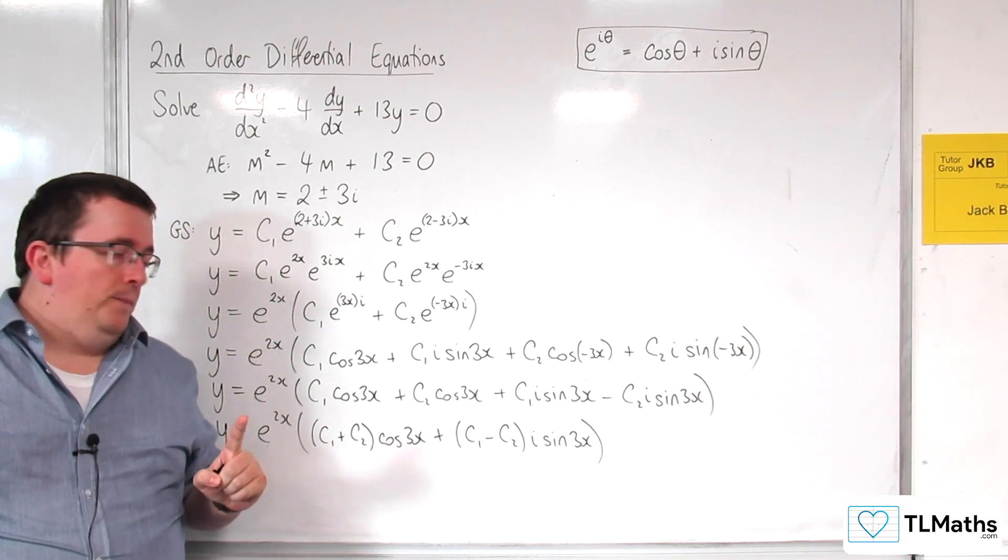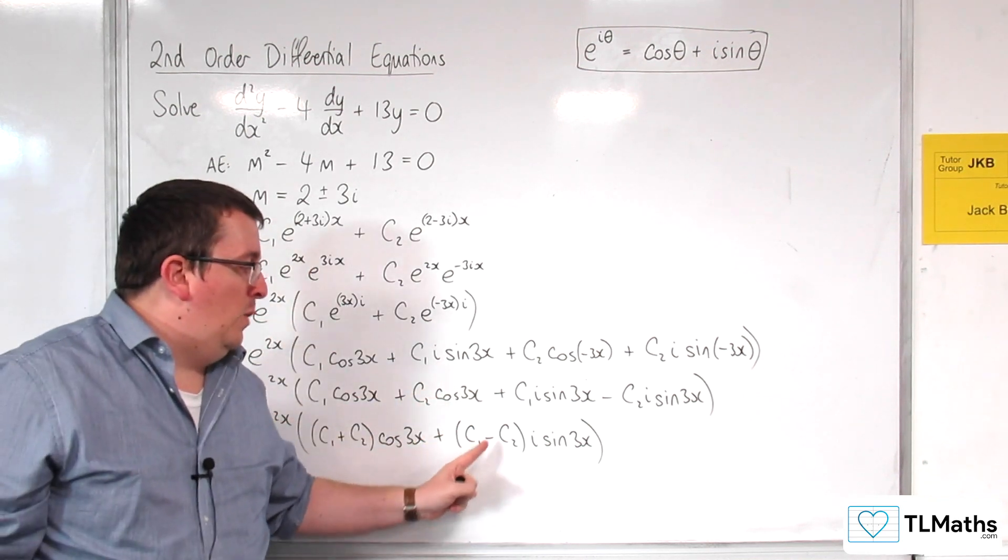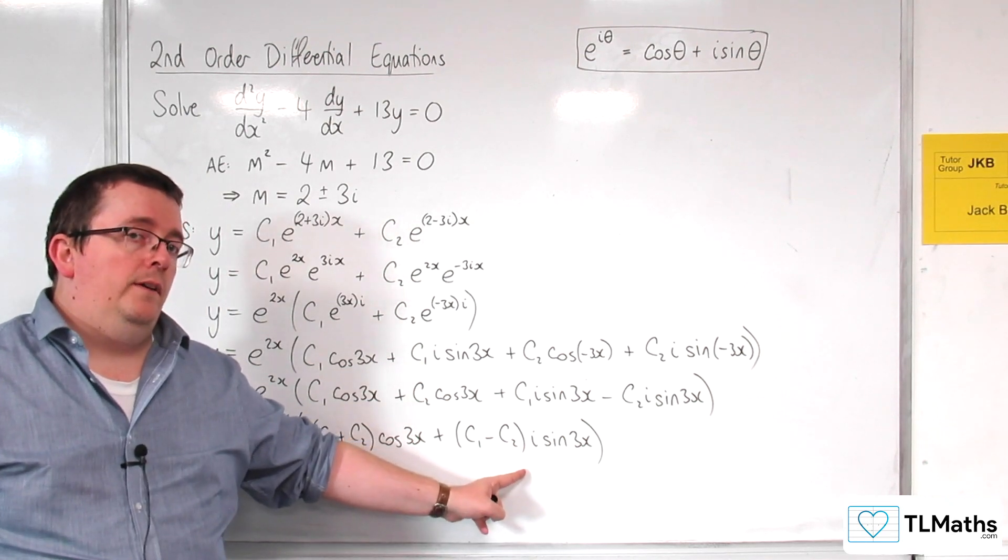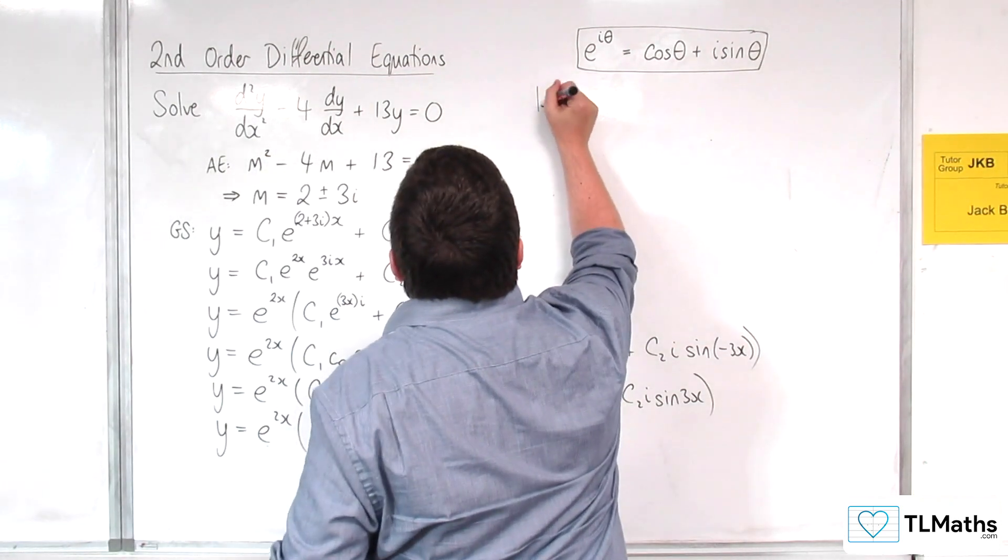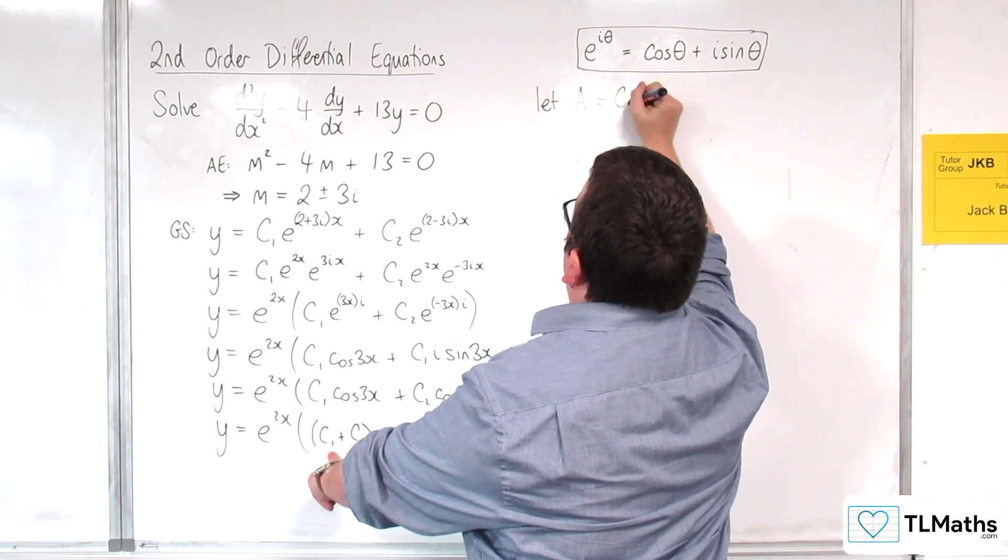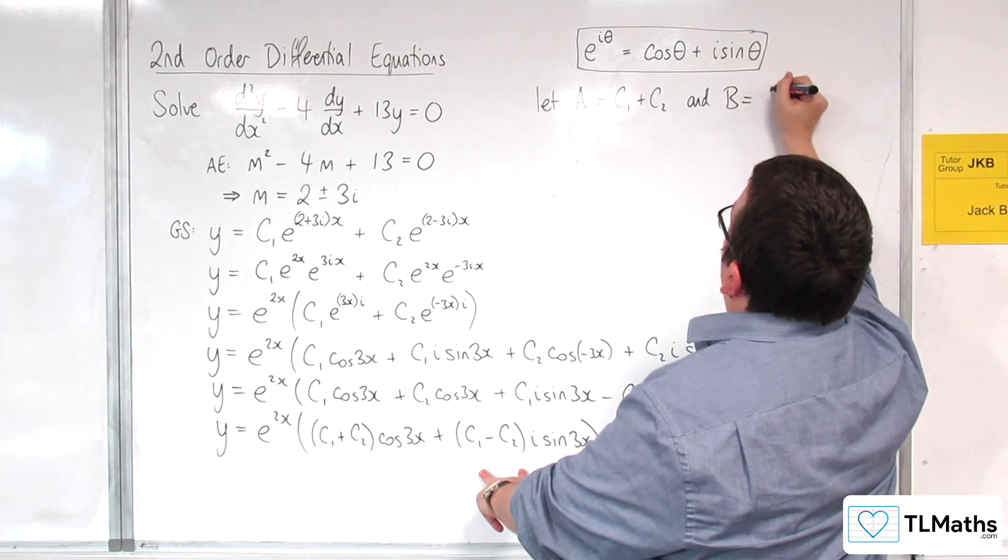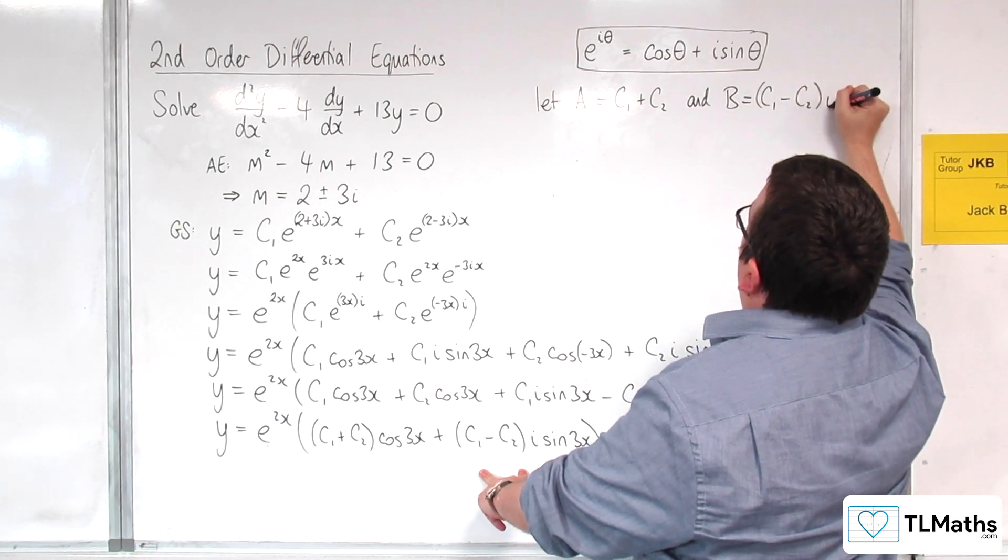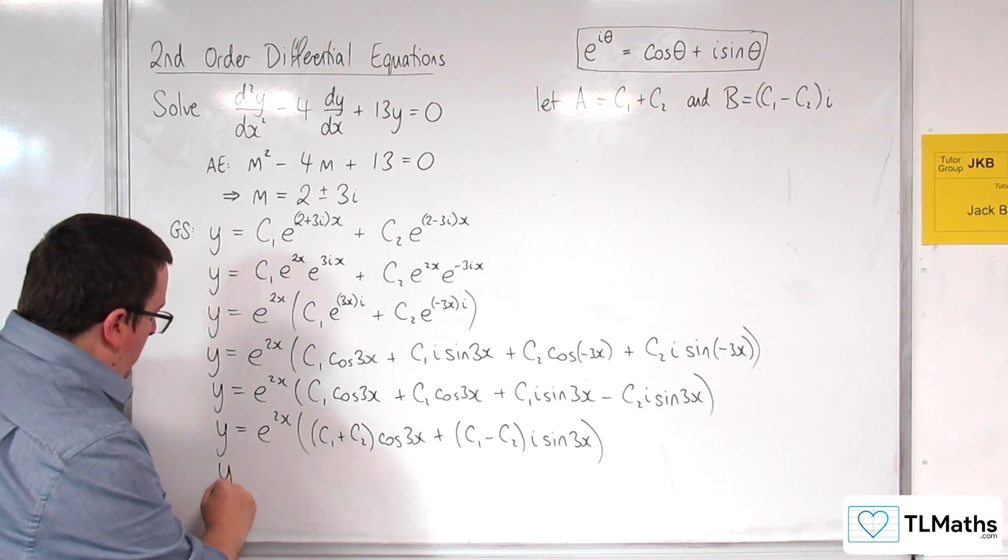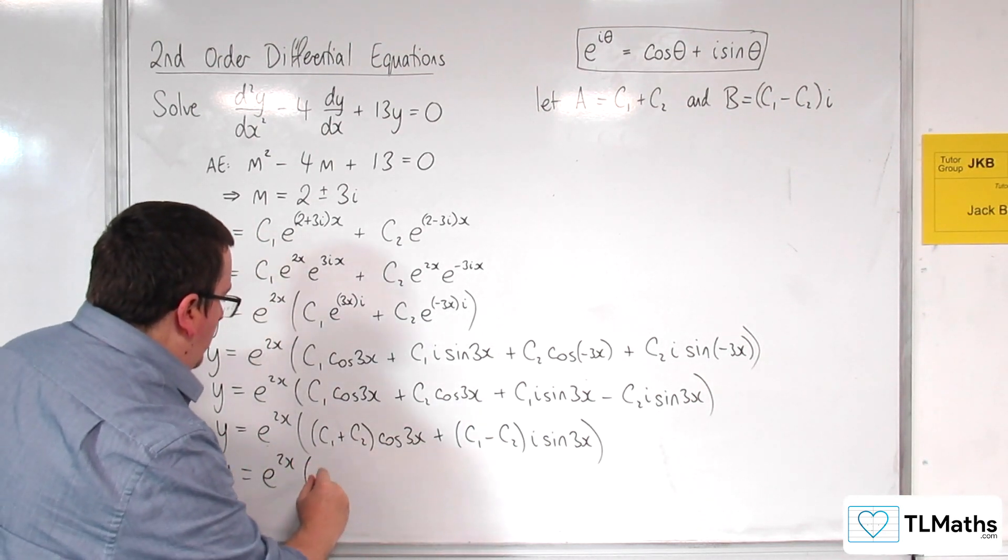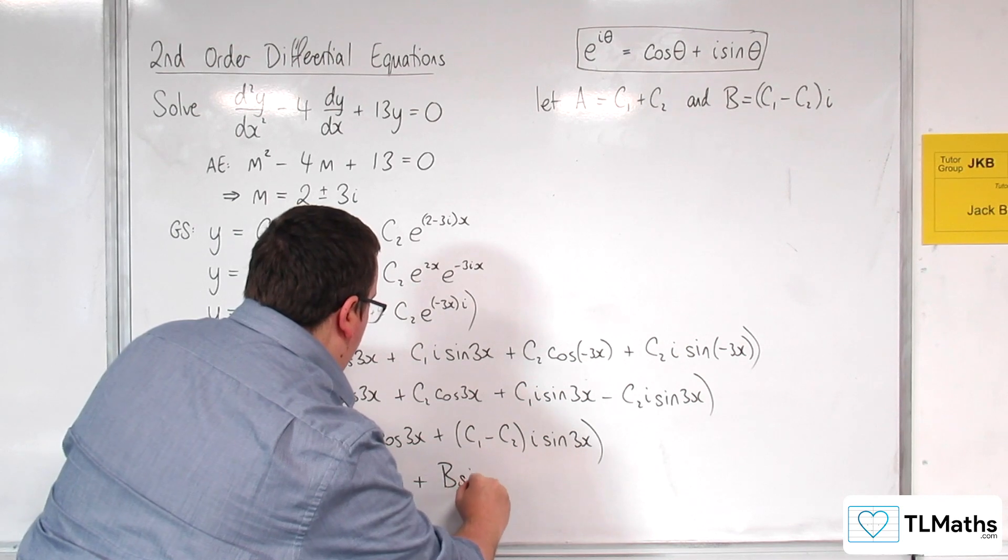Now, at this stage, we've got the c1 and c2, which is just a constant. And we've also got c1 take away c2 times i, which is another constant. Now, what we're going to do is we're going to let a be c1 plus c2. And we're going to let b be the c1 take away c2 times by i.